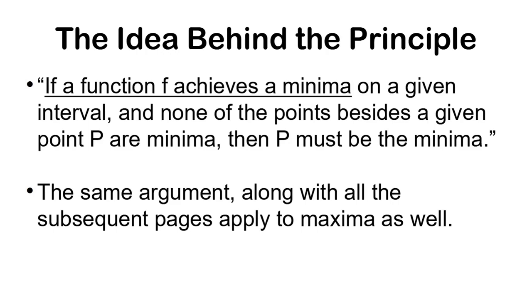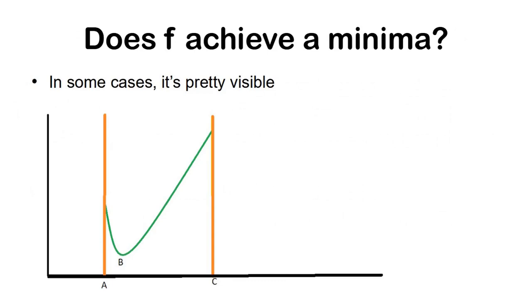But first let's talk about the statement and the prerequisite: if a function f achieves a minima, how do we know if the function achieves a minima or not? In some cases it's pretty visible, like over here anyone could say that the minima is at b. But how exactly are we defining a minima here without calculus? Well we can say that the points around b have a higher value of the function than the point at b, and that's why b is a minima.